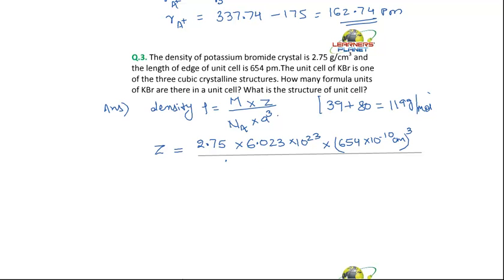From here if you calculate, you will get Z, that is the number of units in one unit cell. So if you calculate all this, it comes out to be 3.87 or we can write it as 4.